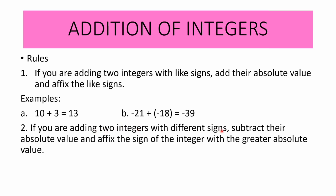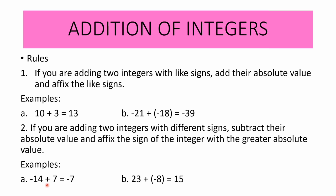Now for the second rule: if you are adding two integers with different signs, subtract their absolute values and affix the sign of the integer with the greater absolute value. For example, negative 14 plus 7 — subtract the absolute values: 14 minus 7 equals 7. Follow the sign of negative 14, which is negative, because negative 14 has the greater absolute value. Therefore, the sum is negative 7.